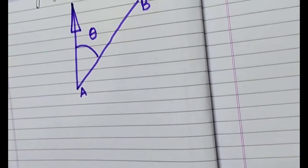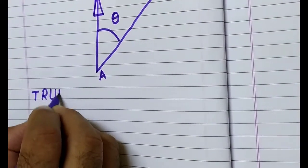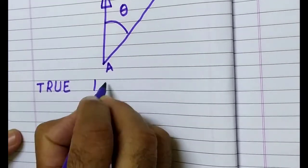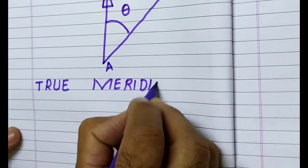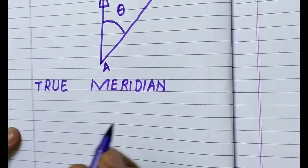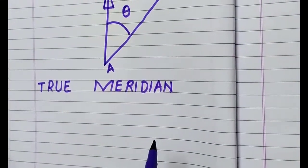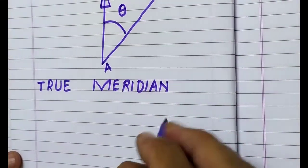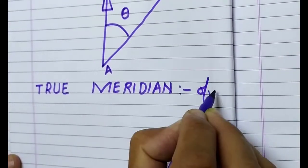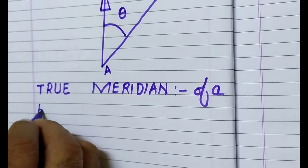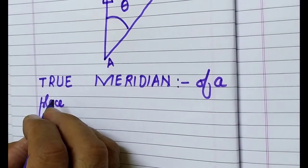Number one is true meridian. True meridian of a place is a direction indicated by an imaginary circle passing around the earth through that place and through the geographical poles.